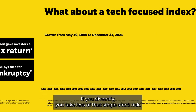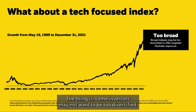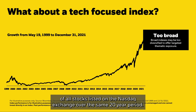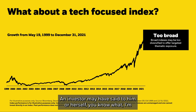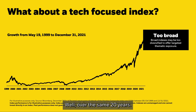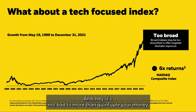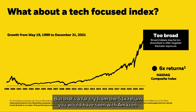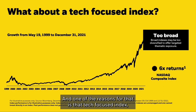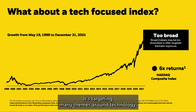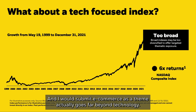What about a traditional index? If you diversify, you take less single stock risk. But some investors may not want to be too diversified. Looking at the NASDAQ Composite Index over the same 20-year period, an investor who chose to invest in technology broadly to capture the e-commerce opportunity would have seen about a 6x return. Not bad — but a far cry from the 51x return with Amazon. That tech-focused index isn't targeting a specific theme like e-commerce; it targets many themes around technology, and e-commerce as a theme actually goes far beyond technology.